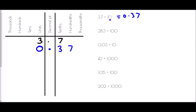For 28.3 divided by 100 — two zeros, so two spaces to the right — the 2 from tens goes to tenths, the 8 from units goes to hundredths, and the 3 from tenths goes to thousandths. We add the decimal point and a placeholder zero: answer is 0.283.